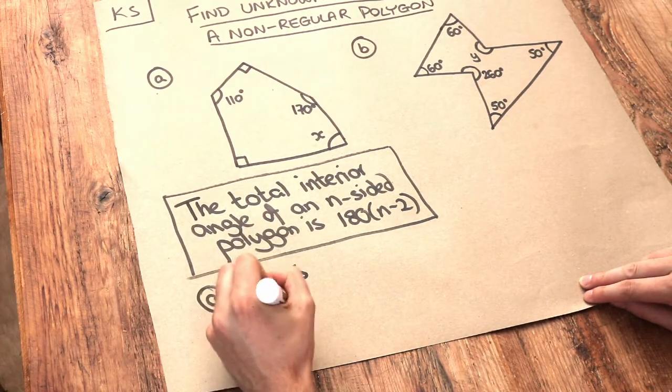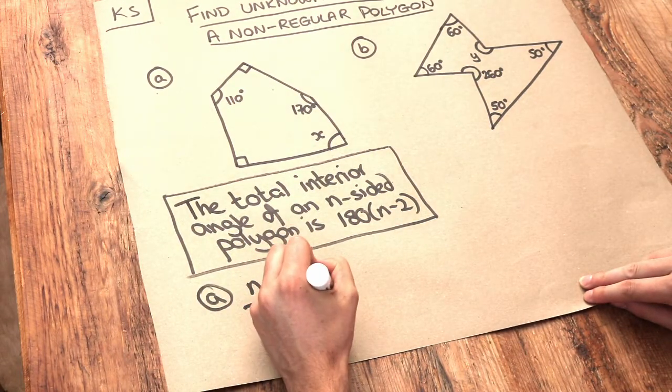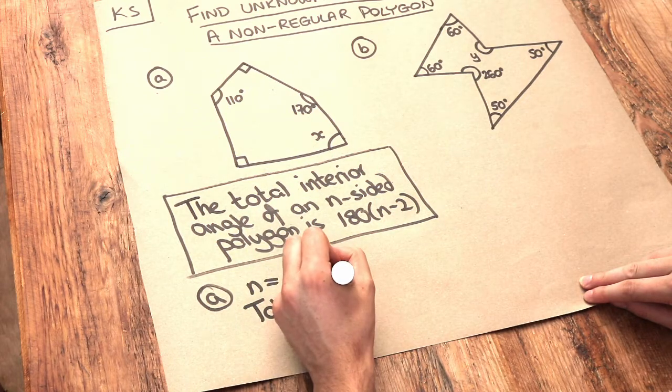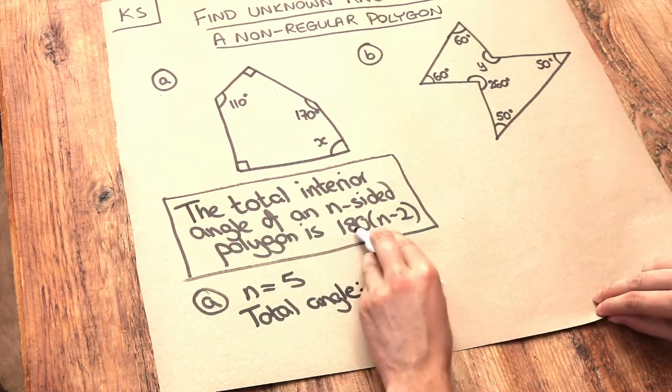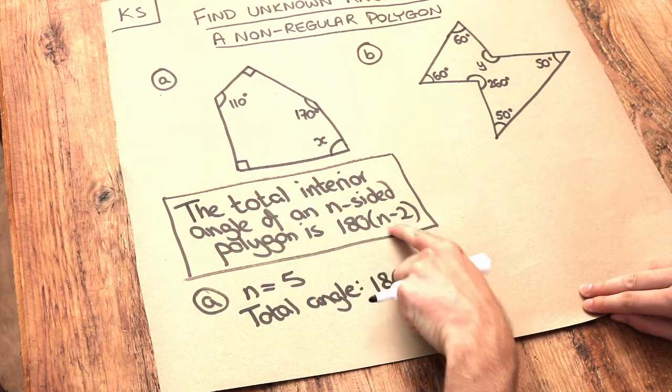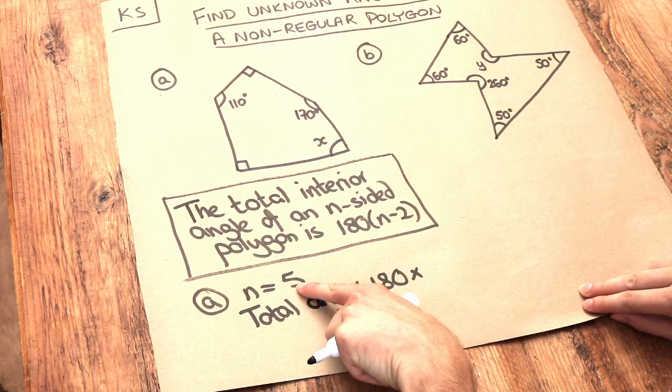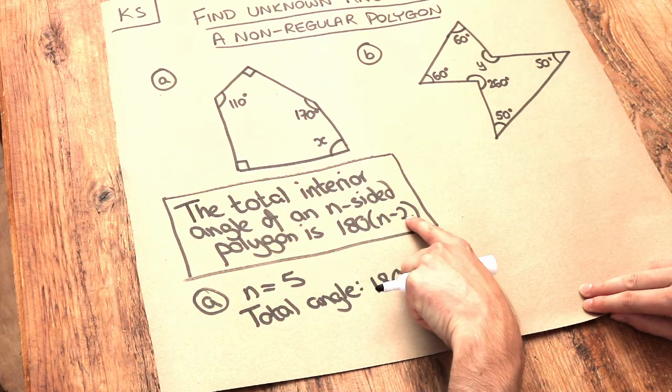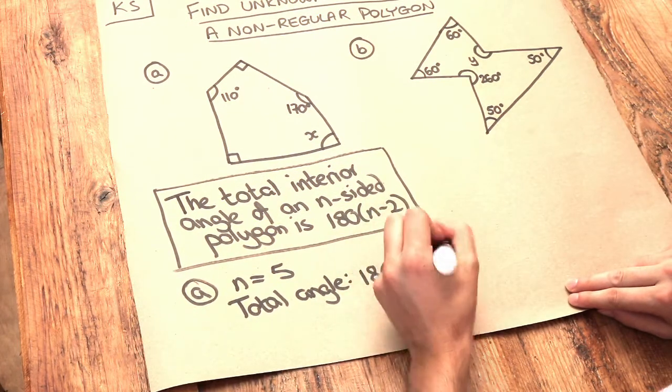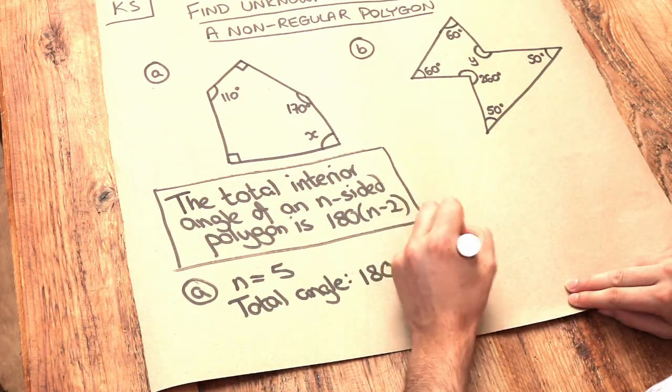So that means we can work out the total of the interior angles. We just do 180 multiplied by n minus 2. Well if n is 5, it's 5 sides, 5 minus 2 is 3, so it's 180 times 3, and that is equal to 540.